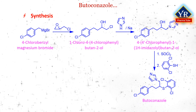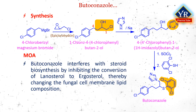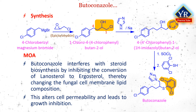Butoconazole is synthesized starting from a reaction of epichlorohydrin with 4-chlorobenzylmagnesium bromide, leading to 1-chloro-4-(4-chlorophenyl)butan-2-ol. This is then reacted with imidazole in the presence of sodium to form 4-(4-chlorophenyl)-1-(1H-imidazol-1-yl)butan-2-ol. The secondary hydroxyl group in this compound is replaced with a chlorine atom upon reaction with thionyl chloride, followed by reaction with 2,6-dichlorothiophenol to obtain butoconazole. Butoconazole interferes with steroid biosynthesis by inhibiting the conversion of lanosterol to ergosterol, thereby changing the fungal cell membrane lipid composition, altering cell permeability, and leading to growth inhibition.